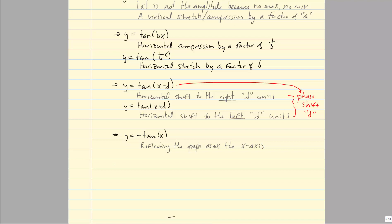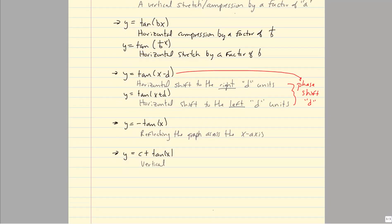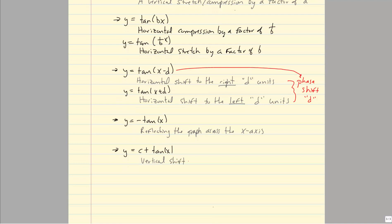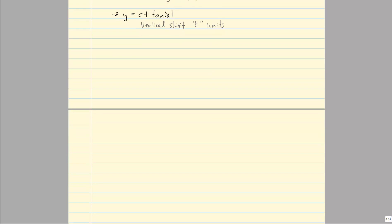For y = c + tan(x), the c value is a vertical shift — up c units if c is positive, and down c units if c is negative. These are the examples of our transformations, also called translations. Now let's talk about our approach — the five-step method — for graphing these.